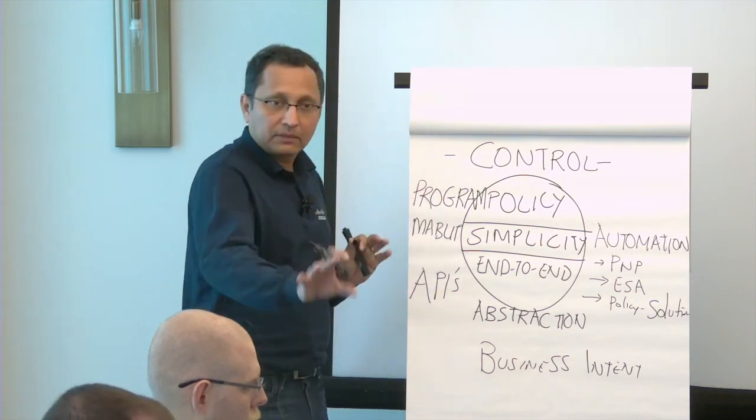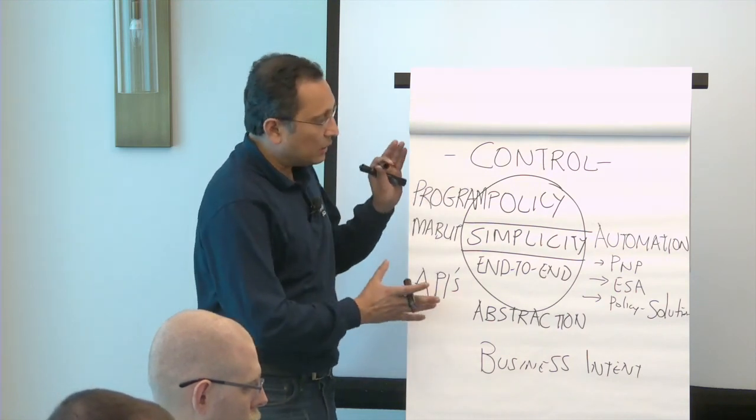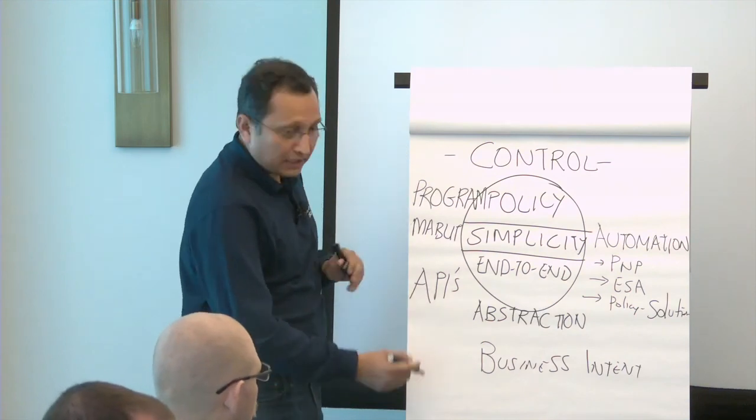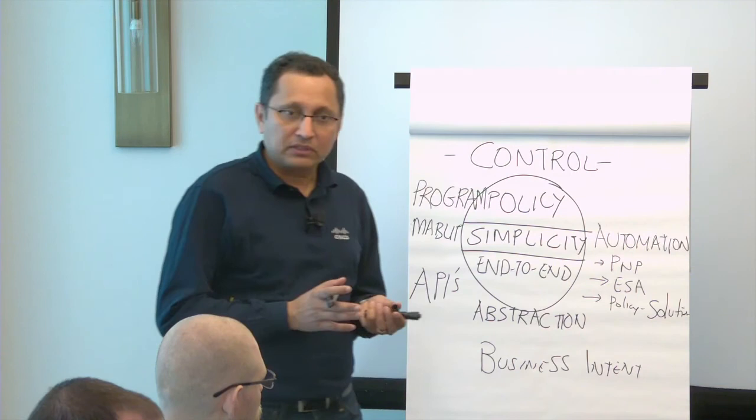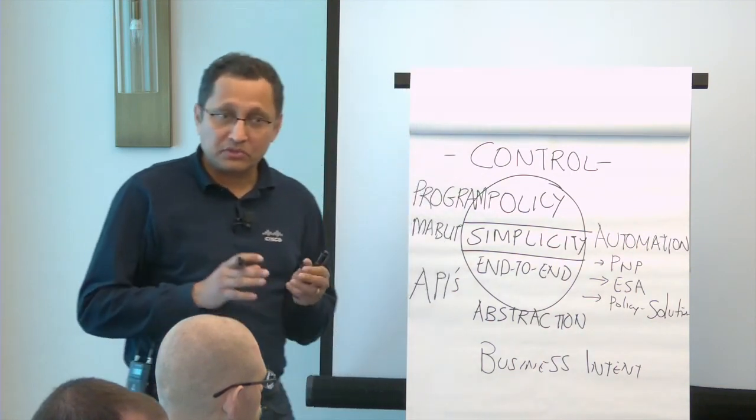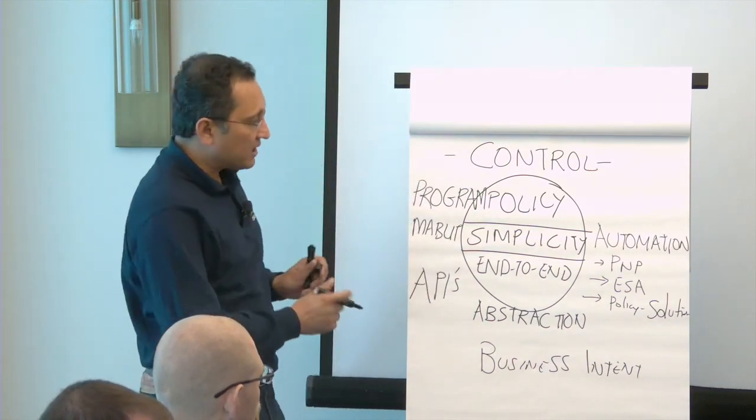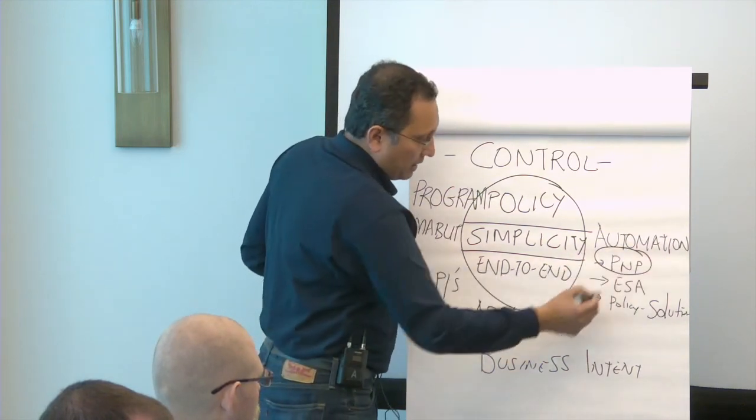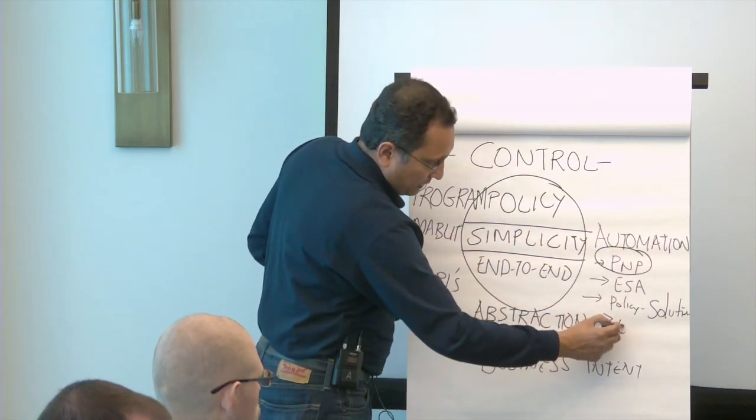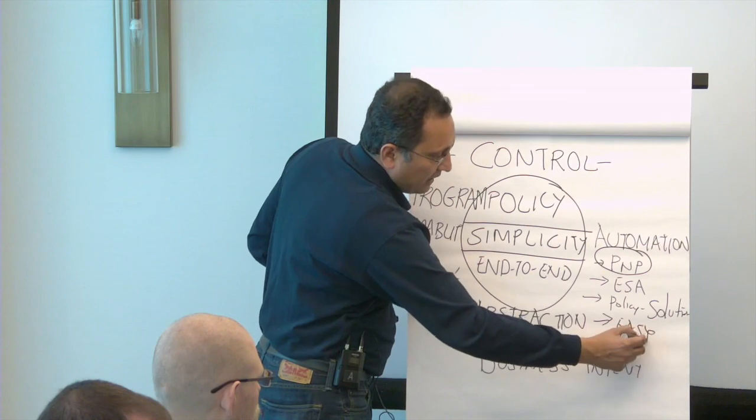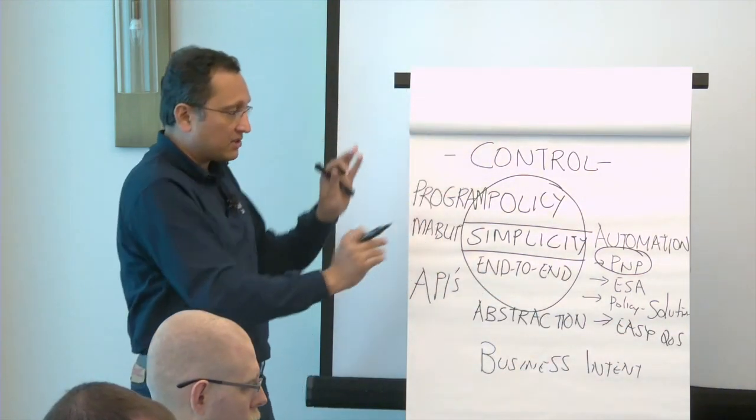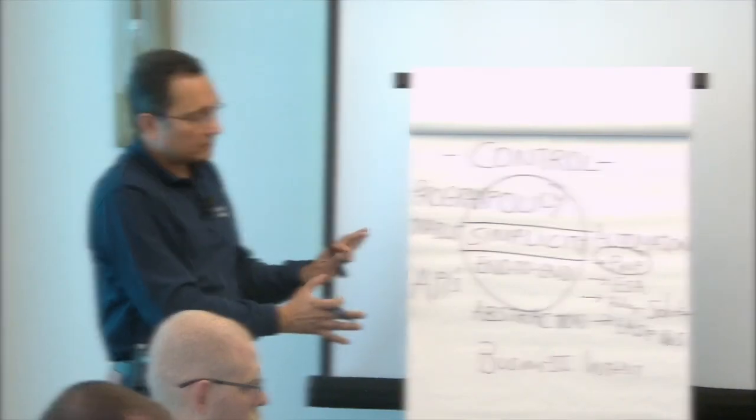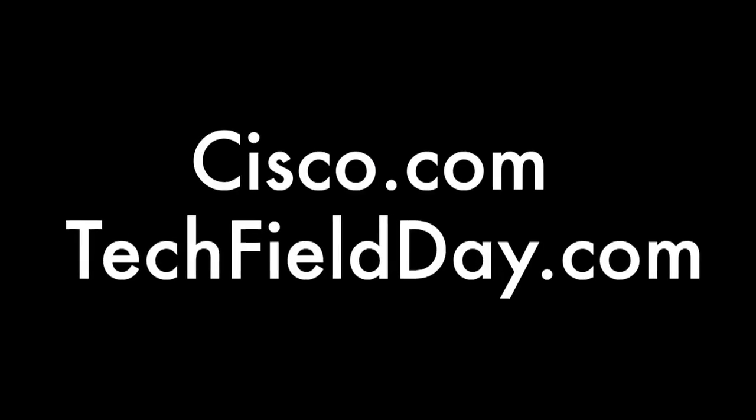So given where we are going right now, let me see if there are any questions where APIC-EM is. We launched in November of last year. We today already have about several thousand downloads, multiple hundreds of customers that are in production with APIC-EM. And of the key use cases that have started with is PNP, is Easy QoS. We were going to demo today because as Tim laid out the technical architecture of that, we're going to show you how Easy QoS is taking that complexity, trying to make that simple. Thank you.